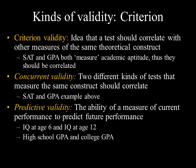Predictive validity involves using a measure of current performance to predict future performance. If you measure a kid's IQ at age six and again at age twelve, you'd hope for similar findings. Similarly, high school GPA should predict college GPA — people who did well in high school probably do well in college. Of course there are exceptions, but on average a measure of a theoretical construct at time one should be a good predictor of performance at time two. That's predictive validity.